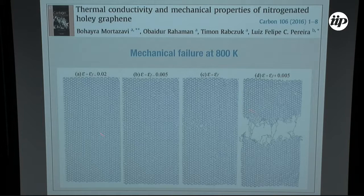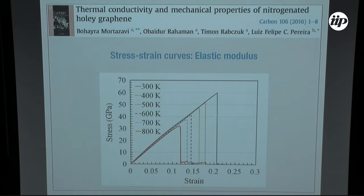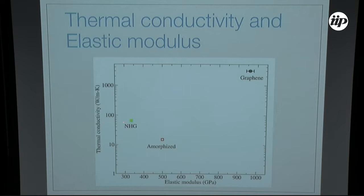We look at the mechanical properties — pulling this material until it breaks. At 300K, 400K, 500K, 600K, 700K, 800K — the higher the temperature, the sooner it breaks due to more atomic agitation. Its thermal conductivity is not very high, but it still has a pretty decent elastic modulus.